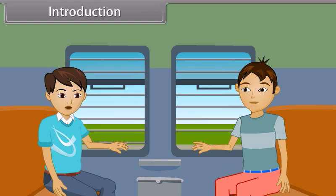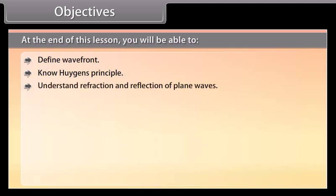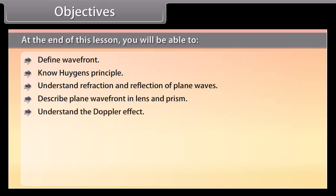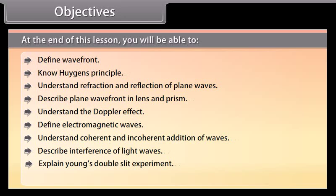It's really interesting. Today we will study about wave optics. At the end of this lesson, you will be able to: define wave front; know Huygens' principle; understand refraction and reflection of plane waves; describe plane wave front in lens and prism; understand the Doppler effect; define electromagnetic waves; understand coherent and incoherent addition of waves; describe interference of light waves; explain Young's double slit experiment; and explain conditions for sustained interference.